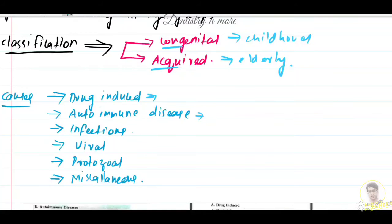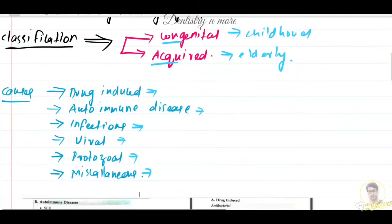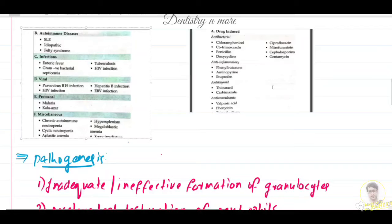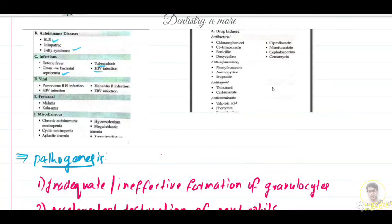In autoimmune diseases, we have systemic lupus erythematosus (SLE), Felty's syndrome, enteric fever, septicemia, tuberculosis, and HIV. For viral causes: HIV, hepatitis B, Epstein-Barr virus infection. Protozoal causes include malaria and kala-azar. Miscellaneous causes include aplastic anemia, hypersplenism, megaloblastic anemia, chronic autoimmune neutropenia, and cyclic neutropenia.